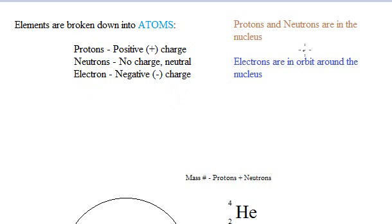The protons and neutrons are actually inside of the nucleus and they create what's called a mass number. We'll get into that later. The electrons are actually what's in orbit around the nucleus.